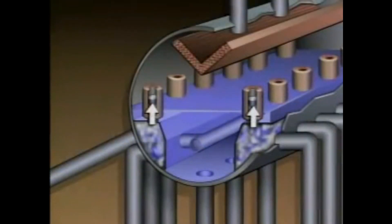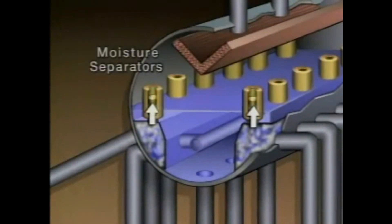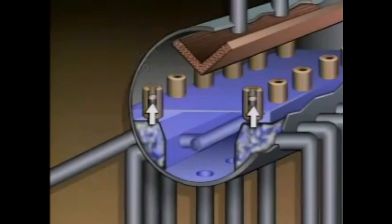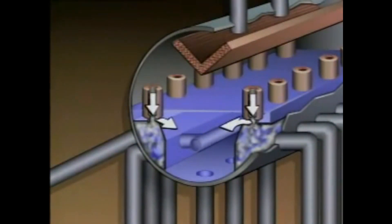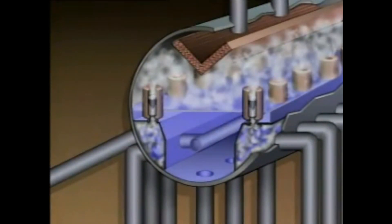The shrouds direct the mixture of water and steam into moisture separators, which are located at the top of the shrouds. The moisture separators separate the water from the steam. The water falls into the lower part of the drum, where it mixes with the feed water.